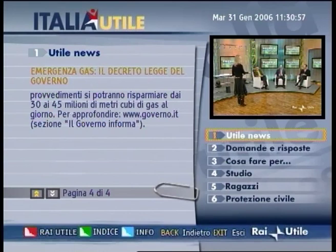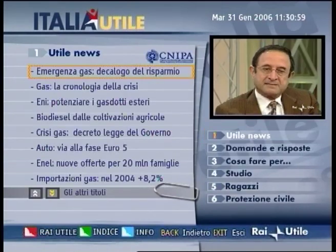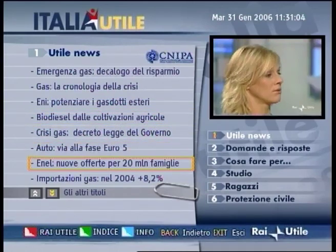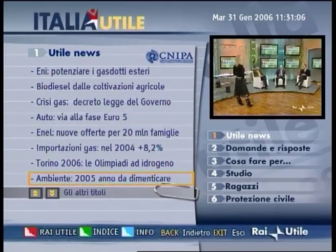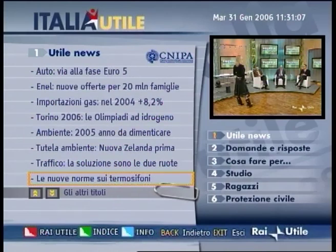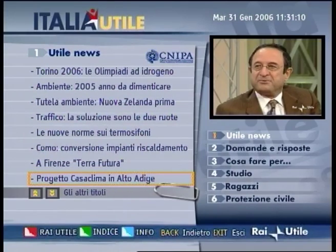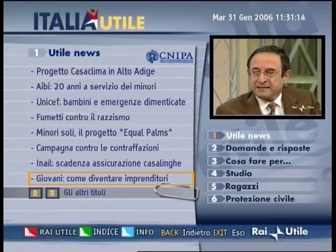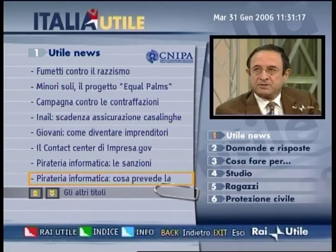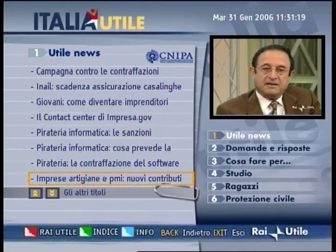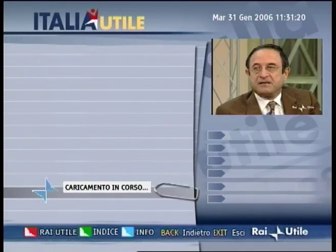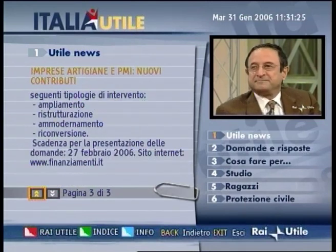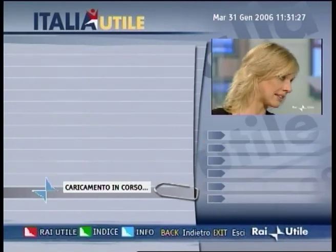Using our interactive remote control, we can click on the news item 'Gas Emergency' and, as you can see, in real time the channel offers us a menu to navigate with the use of our remote control. On the bottom right, there are another six subjects with links to another list of news items. Let's click on Italian news and a summary with 28 energy-related news items of public interest appears.